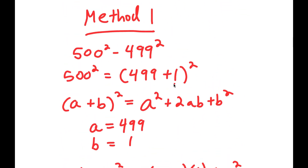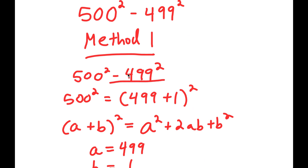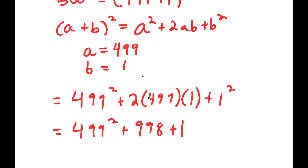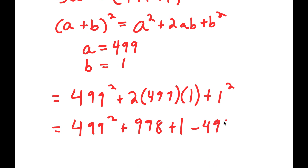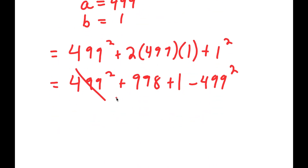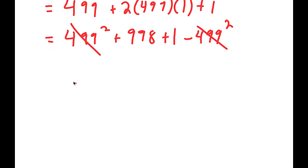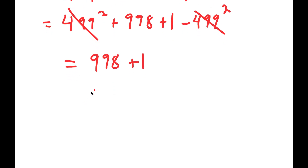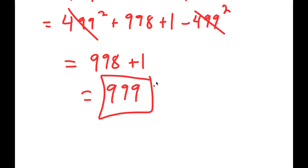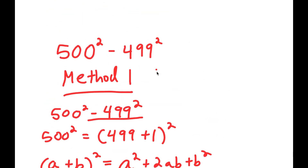Remember, at the end we have negative 499 squared, so we add that back in. 499 squared minus 499 squared cancels out, leaving 998 plus 1, which equals 999. That is the first method.